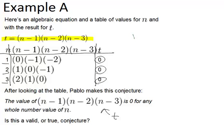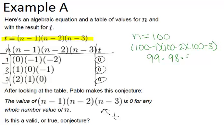Let's just try 100. Say n equals 100. We're trying to see if t will actually equal zero. So let's plug it in. We would have 100 minus 1 times 100 minus 2 times 100 minus 3. 100 minus 1 is 99, then we've got times 98 and times 97.